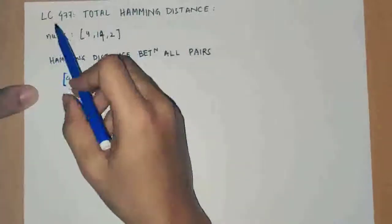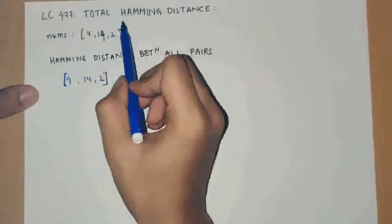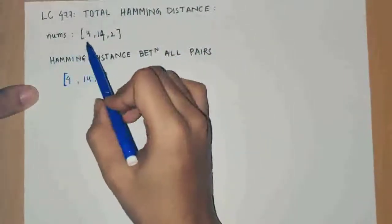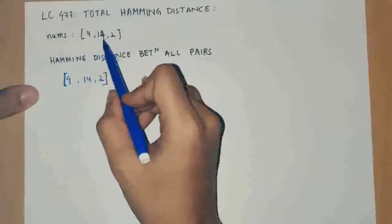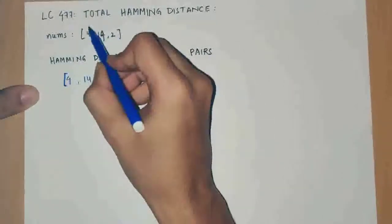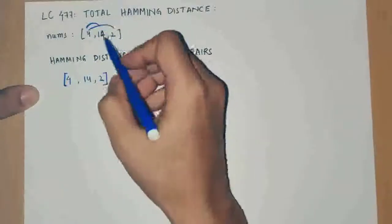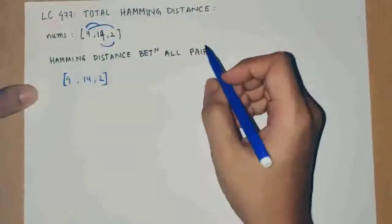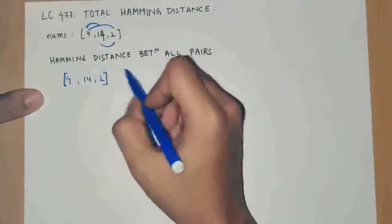Hello guys, in this problem I'll be explaining LeetCode problem 477, Total Hamming Distance. We are given an array of numbers and we need to find out the total hamming distance between all pairs of numbers. So 4 and 2 is one pair, 4 and 2 is one pair, and 1 and 4 is one pair. So all unique pairs of numbers — we need to find the hamming distance.